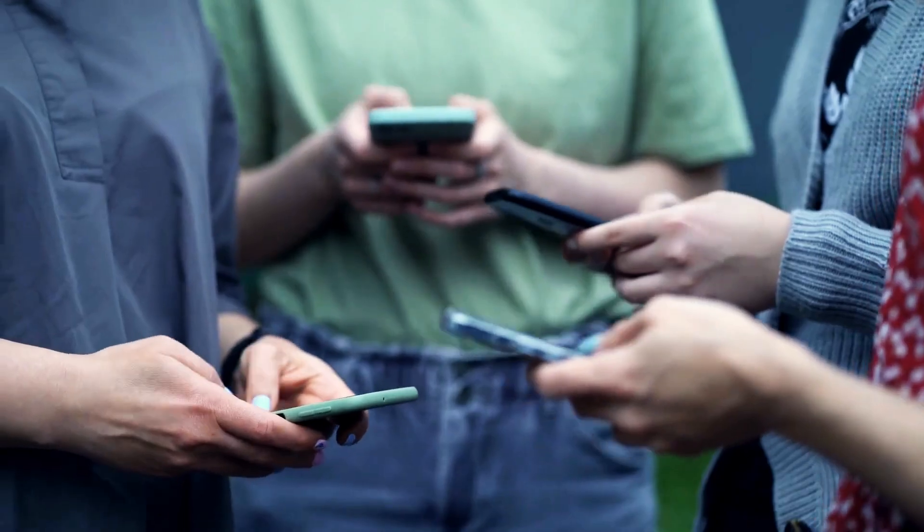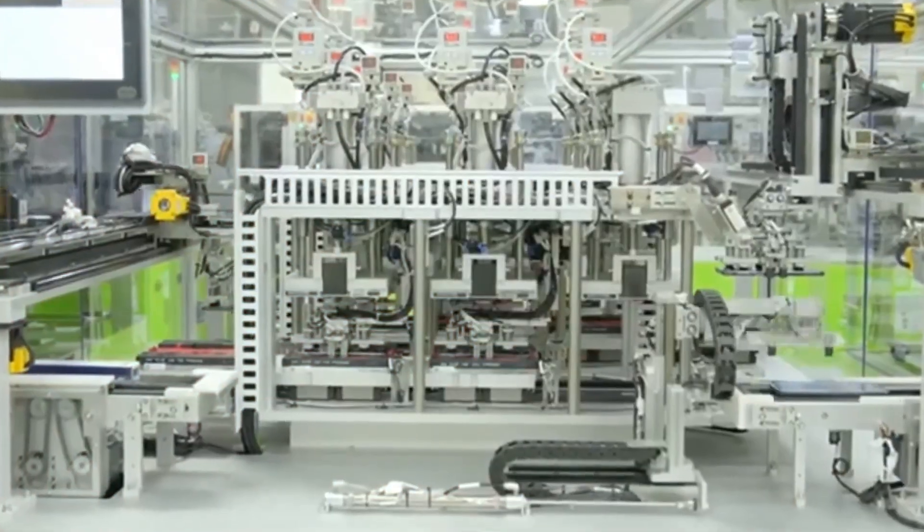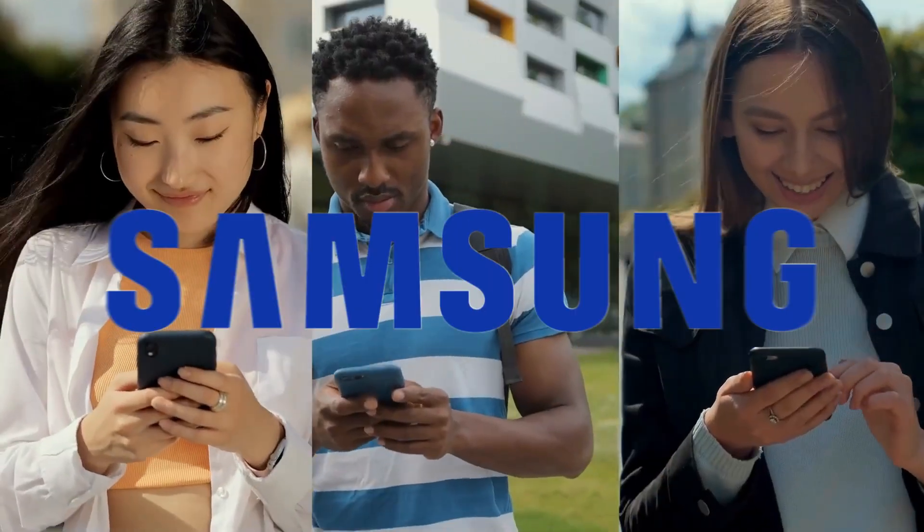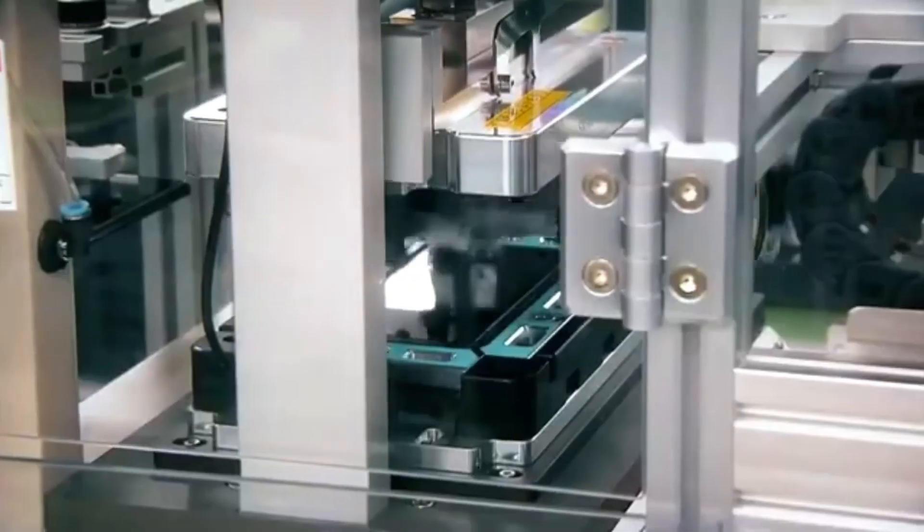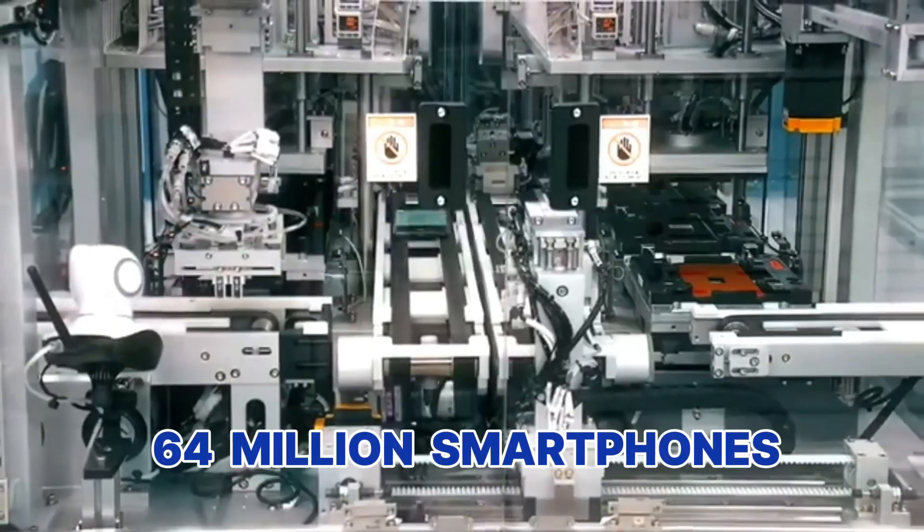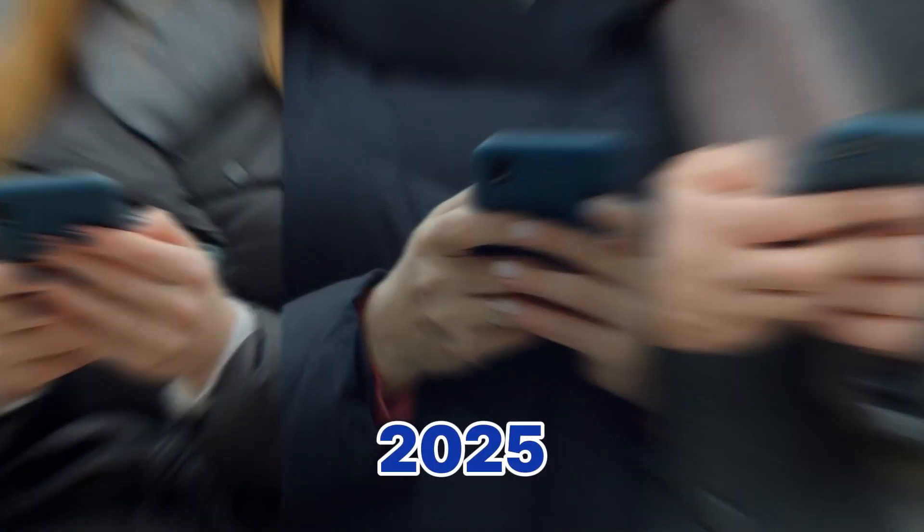What if I told you that right now, at this very moment, a robot army is building the phone in your pocket? Not just any robots. We're talking about Samsung's $50 billion automated empire that just produced 64 million smartphones in the first quarter of 2025 alone.